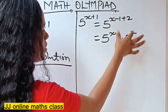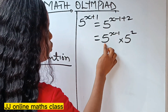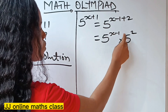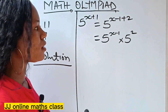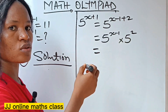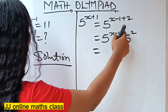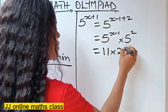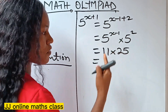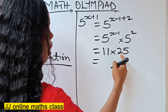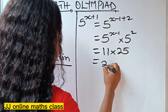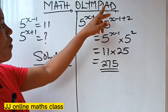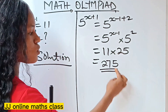Using the law I explained — pick the base 5 and add the powers x minus 1 plus 2 — we have not changed anything. Now we substitute: 5 to the power of x minus 1 is 11, and 5 squared is 25. So it's 11 times 25. To multiply by 11, write 2 and 5, then 2 plus 5 is 7, giving us 275. Therefore 5 to the power of x plus 1 equals 275.